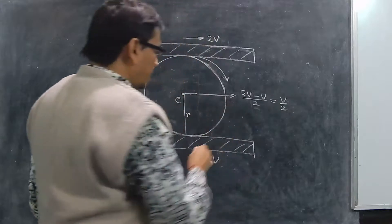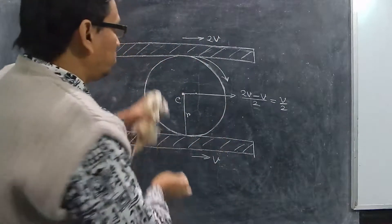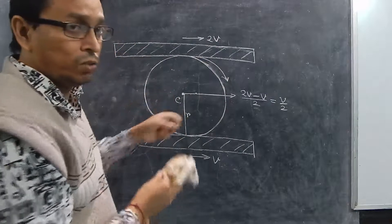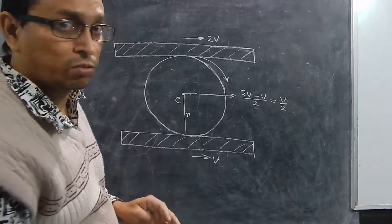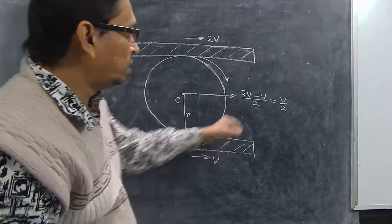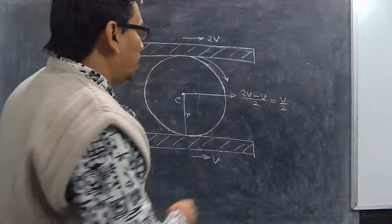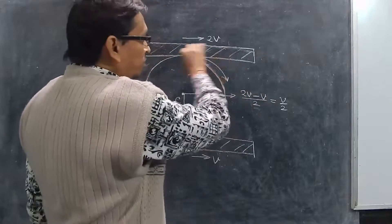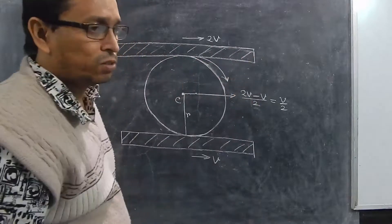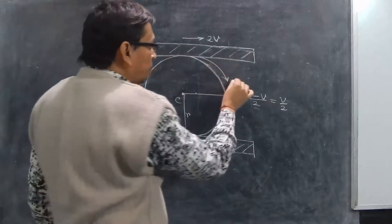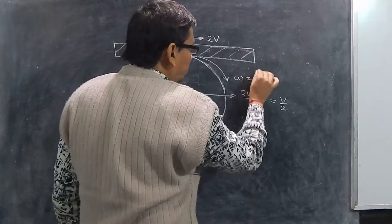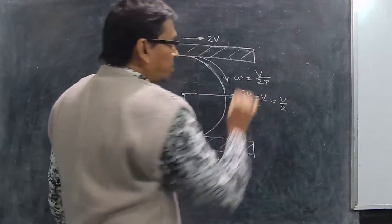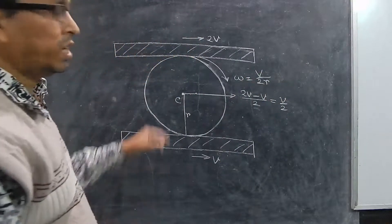Now the center of mass will have velocity V by 2 with respect to this reference frame — the total reference frame — not with respect to someone standing outside. So omega will originate from the side of the plank moving with higher velocity, and omega will be V by 2R. In this case omega is decreasing.